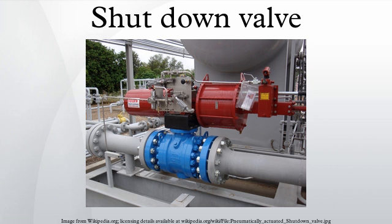As shutdown valves form part of a safety instrumented system, it is necessary to operate the valve by means of an actuator. These actuators are normally fail-safe fluid power type. Typical examples include pneumatic cylinder, hydraulic cylinder, and electro-hydraulic actuator.